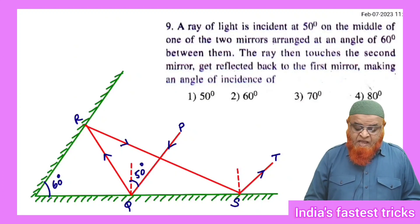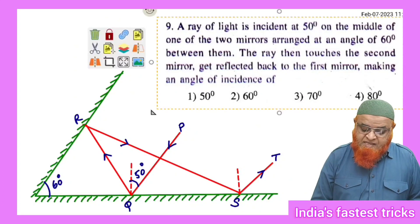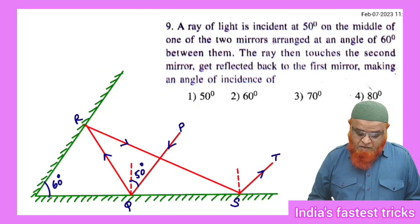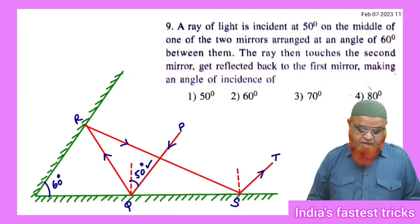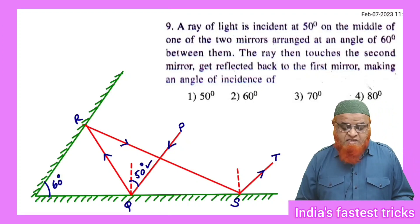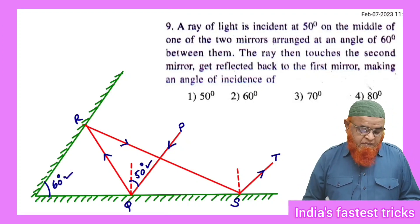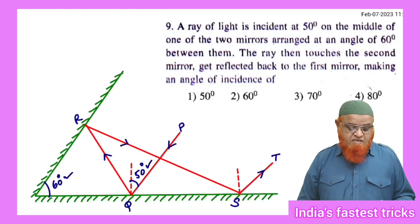Now let us see here. It is said that the light ray is incident at an angle of 50 degrees. So it is incident at an angle of 50 degrees, and that 50 degrees is given here. The two mirrors are having a certain angle of 60 degrees between them.